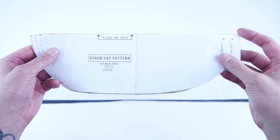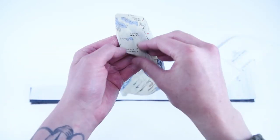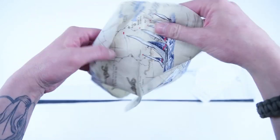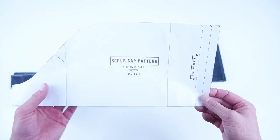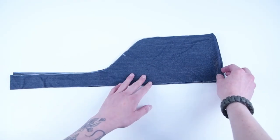After cutting out the pattern, you're going to want to end up with one top main panel. And be sure to cut this panel on the fold. And two side main panels. Also cut this pattern on the fold.